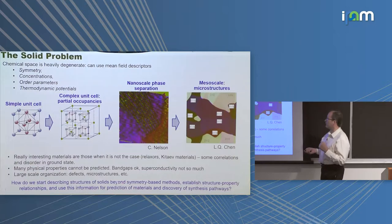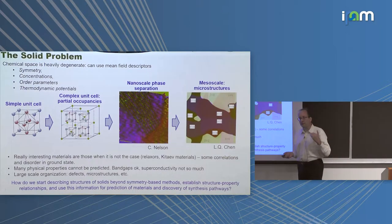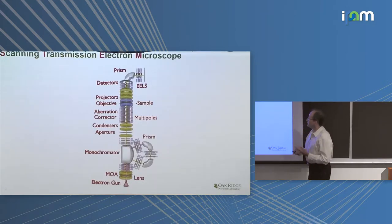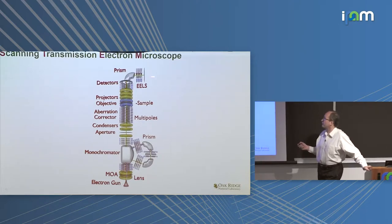So the challenge becomes, how can we describe solids? What is our equivalent of SMILES or any other type of notation for solids? How can we describe them beyond symmetry-based methods? How we describe structure-property relationships? How we use this information for prediction?